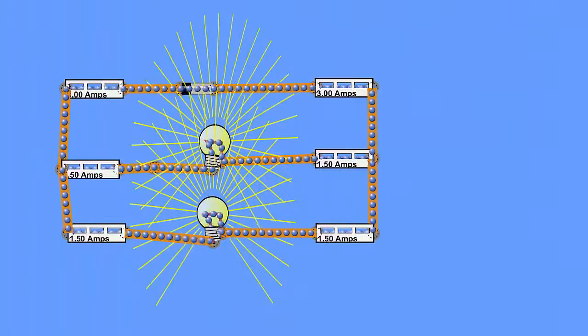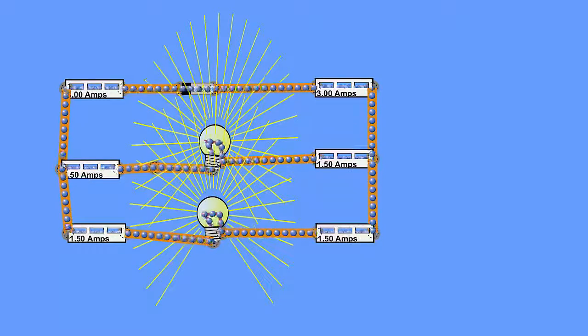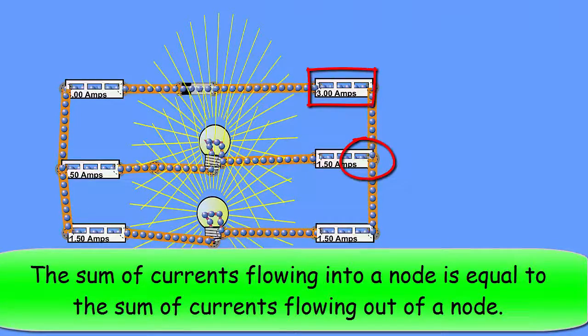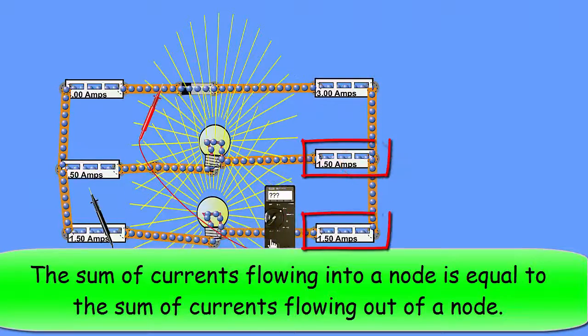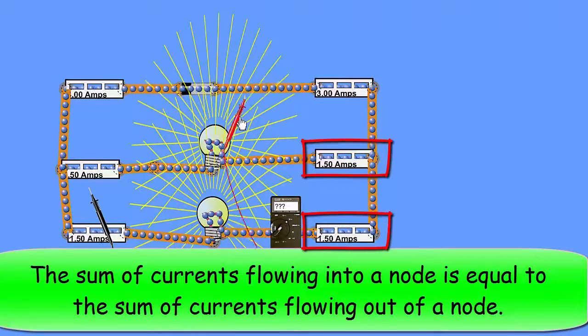Now we get to see another example of Kirchhoff's great ideas, and he noticed that the sum of the current entering a node is equal to the sum of the currents exiting that node. So that's known as Kirchhoff's current law, or Kirchhoff's first law.